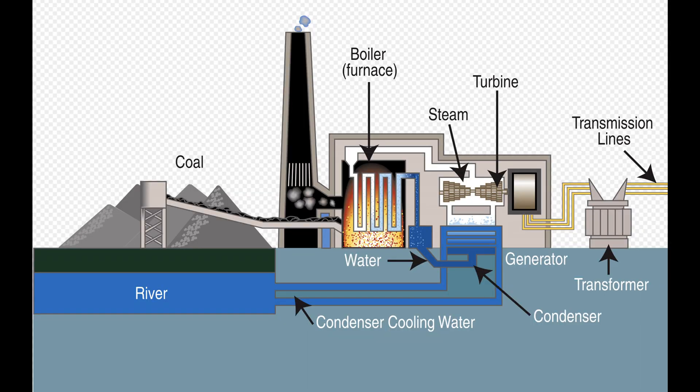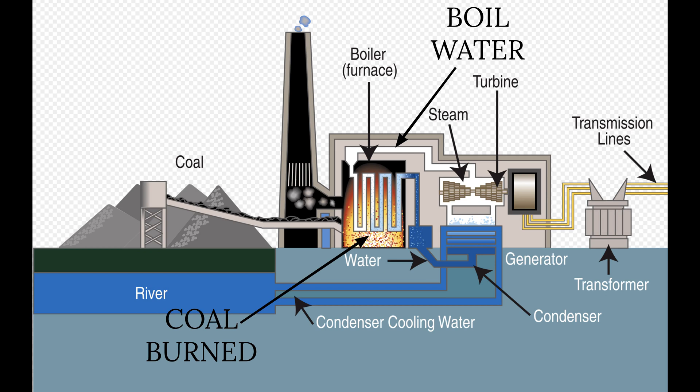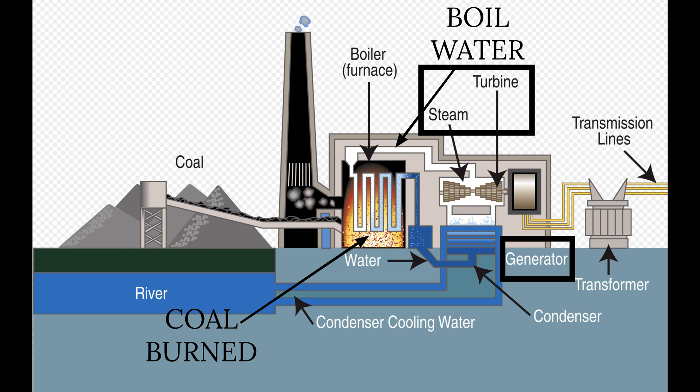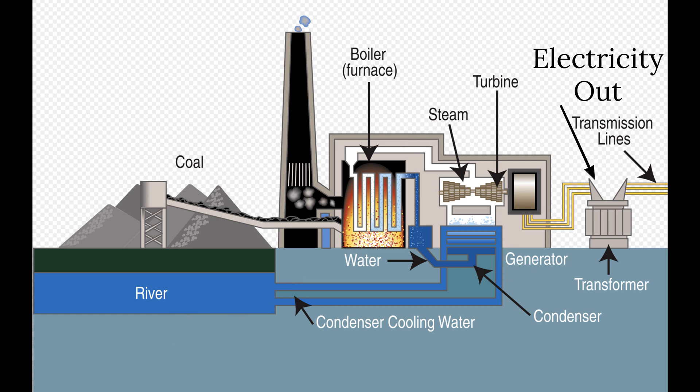So what do we use coal for? The number one use of coal in the world today is to produce electricity. The way it works is we burn coal, take that heat and boil water. The vast majority of electricity production in the world comes from boiling water and running it through what's known as a steam turbine. When the pressurized steam goes through the steam turbine, it spins, and that spinning is connected to a generator which produces electricity we can send to all sorts of places to be used as electric power in its final consumption form.